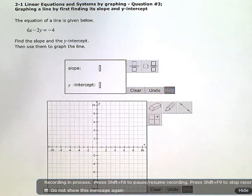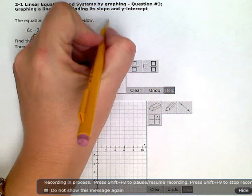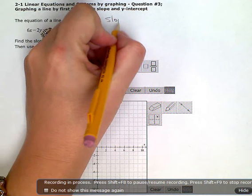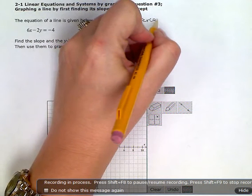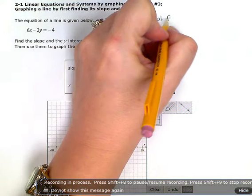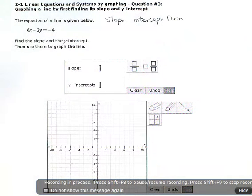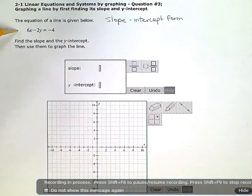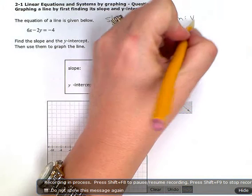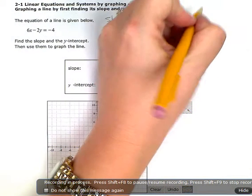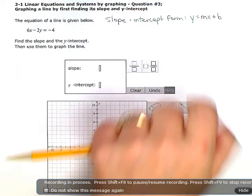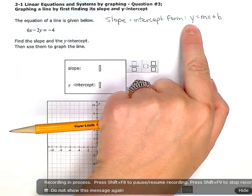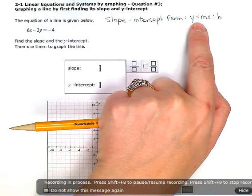Well, the slope and the y-intercept are easiest to see when my line is in slope-intercept form. And right now, my equation is not in slope-intercept form. Slope-intercept form is y equals mx plus b. The key being the y is all by itself. It's y equals, and then everything else on the other side.